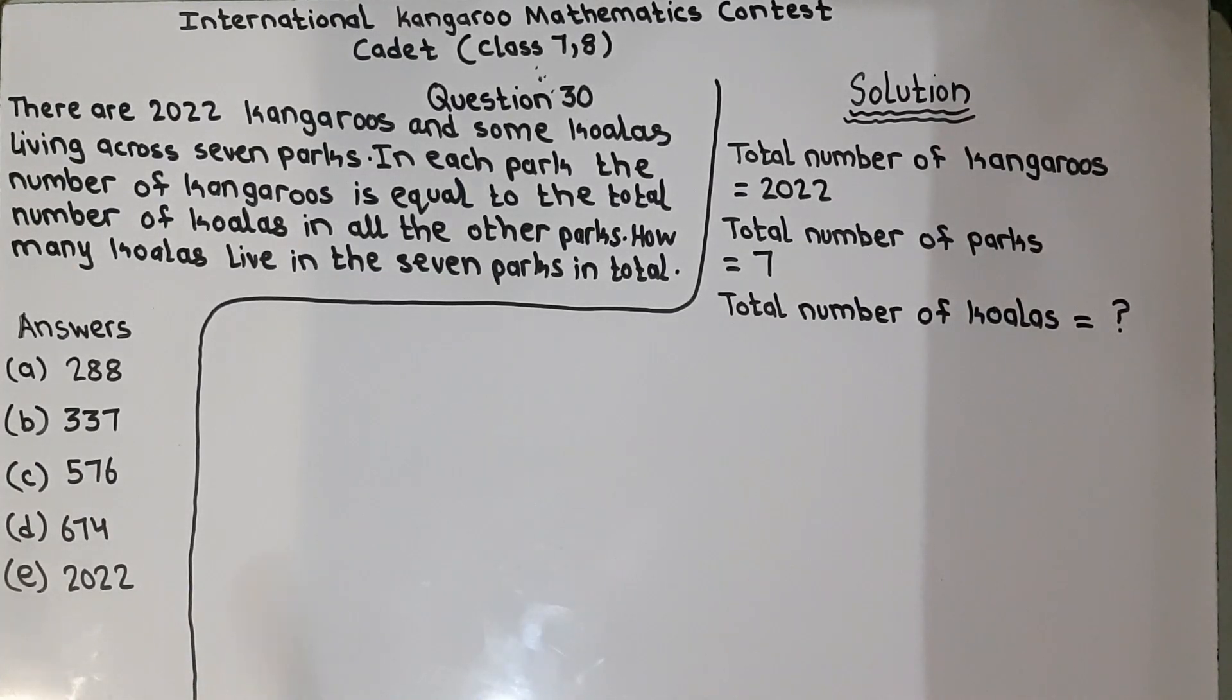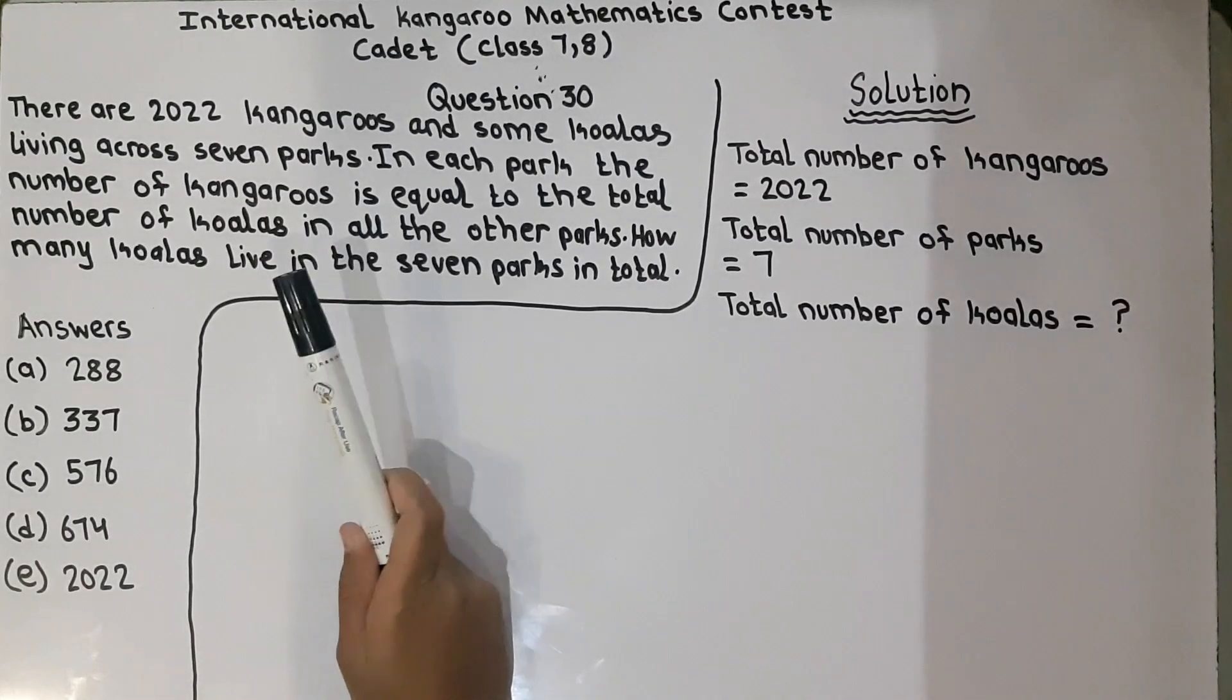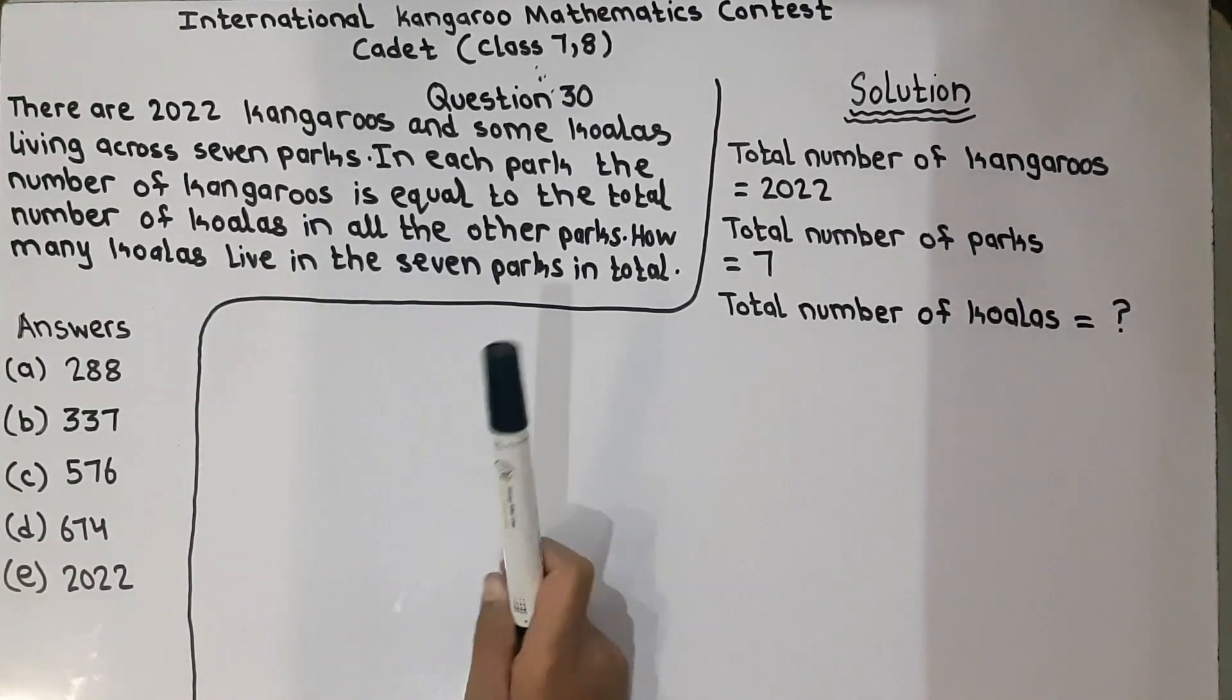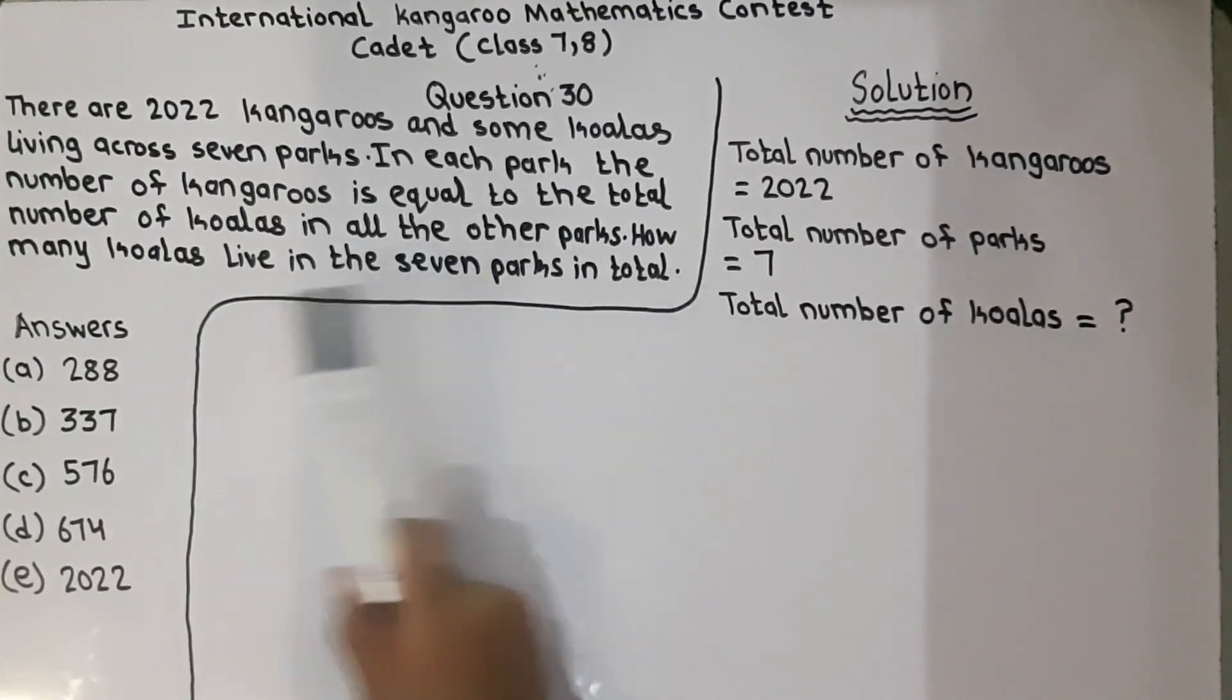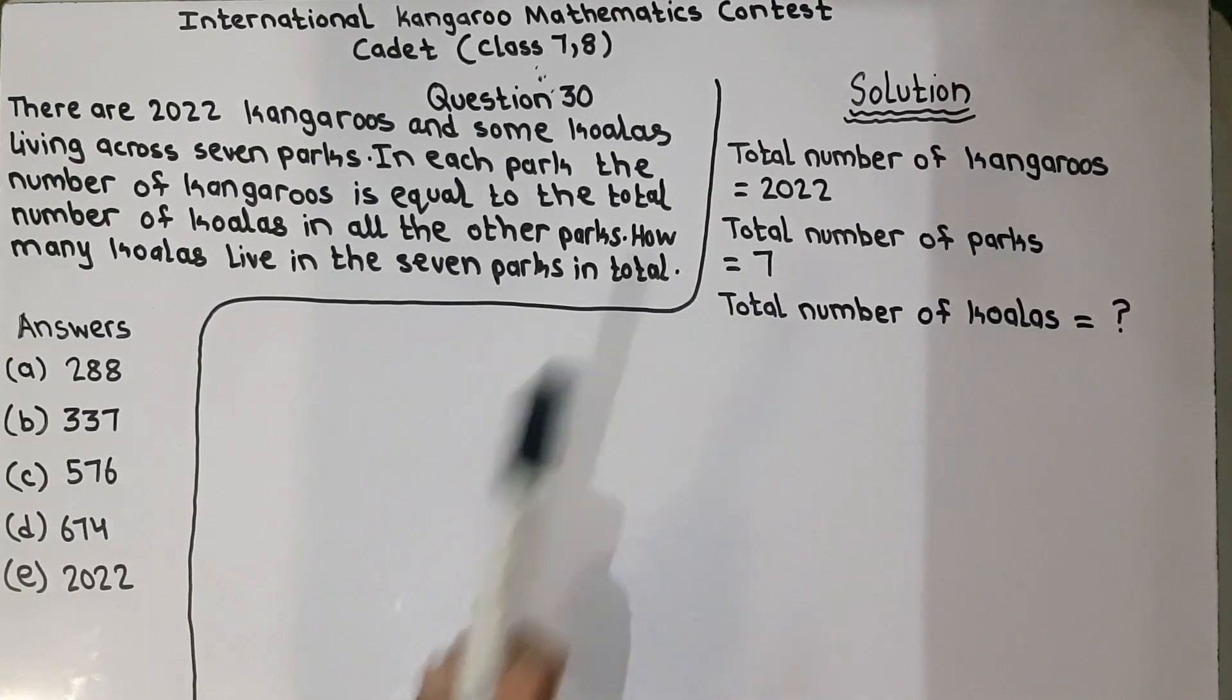He is saying that the number of kangaroos is equal to the total number of koalas living in all the other parks. This means that if, for example, in one park the number of kangaroos is 50, then the total number of koalas is equal to 50. Now, we have to find the number of kangaroos and then we will find the number of koalas. How many koalas live in the 7 parks in total?